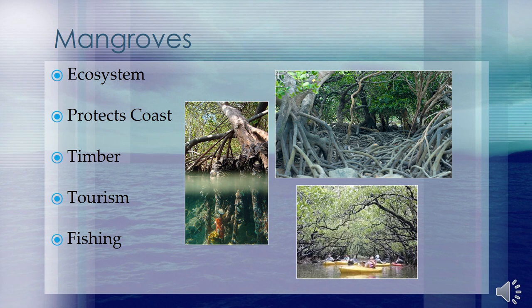Two, they are a breeding ground and nursery. They provide breeding and nursing grounds for a wide range of marine and fish species such as fish, crabs, oysters, other invertebrates, and wildlife such as birds and reptiles. Three, they are a source of food, medicine, and raw materials. They provide food, medicine, fuel, and building materials for local communities as well as the natural environment.